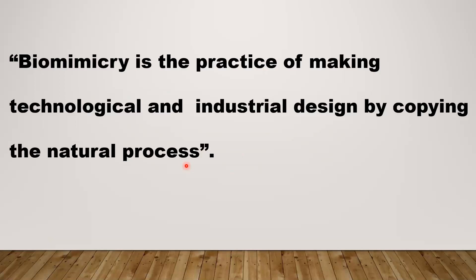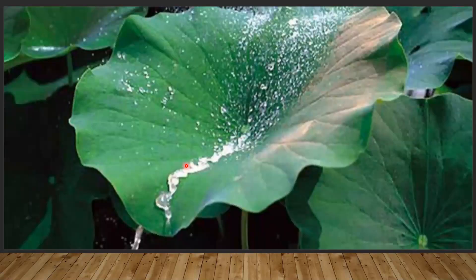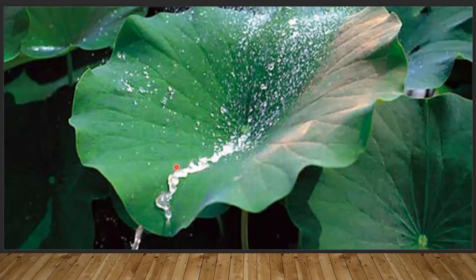Some examples are as follows. The first one is self-cleaning. The leaves of the lotus flower have very high water repellency, which keeps them always clean. This property of lotus surfaces was studied and mimicked by nano engineers to design self-cleaning surfaces that keep themselves dry and clean. Accordingly, nano titanium dioxide is used for this purpose.